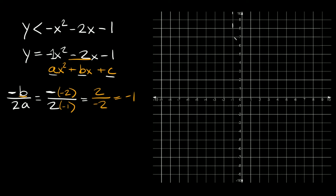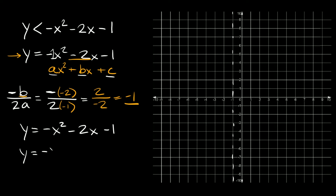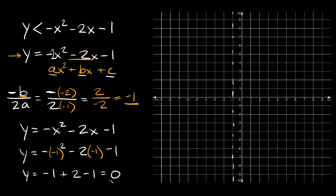So x equals negative 1 is right here, and our vertex is going to lie somewhere on this line. To figure out where exactly, we take our x-coordinate — negative 1 — and plug it in for x in the equation. So y equals negative x squared minus 2x minus 1 gives us y equals negative (negative 1) squared minus 2 times (negative 1) minus 1. Negative 1 squared is positive 1, times the negative sign gives negative 1. Negative 2 times negative 1 is positive 2. So negative 1 plus 2 minus 1 equals 0. So the vertex is at negative 1 comma 0.